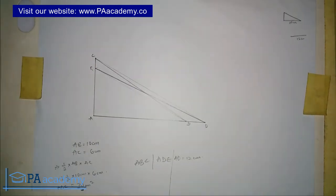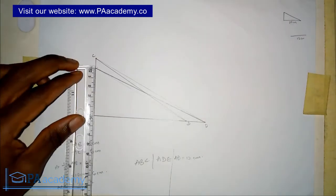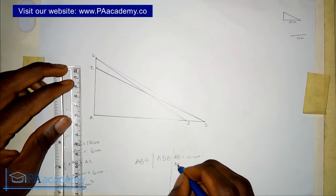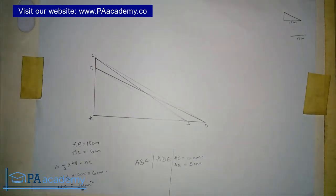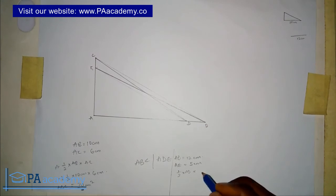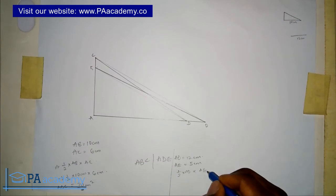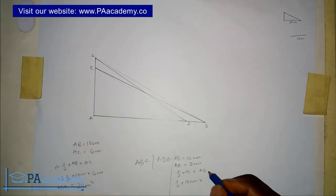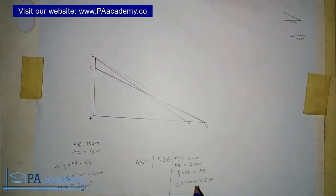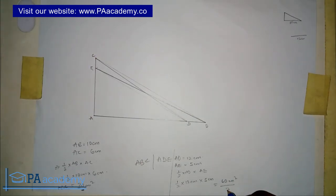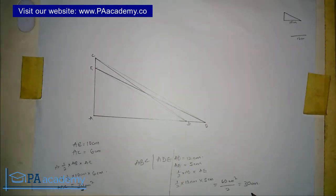For the height — that's from point A to point E — measuring gives us 5 centimeters, so AE equals 5 centimeters. Putting this into the formula: area equals one-half times base AD times height AE — that's one-half times 12 centimeters times 5 centimeters. 12 times 5 gives 60 centimeters squared, divided by 2 gives 30 centimeters squared. This confirms the steps are correct.